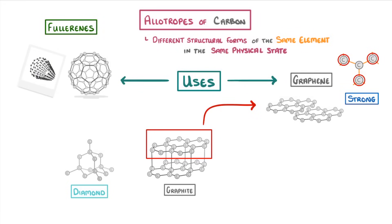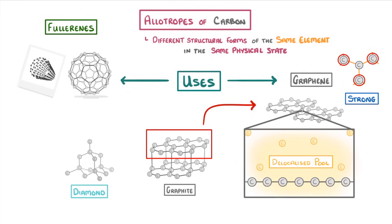And because each of the atoms donates one of its electrons to a delocalized pool of electrons, graphene can also conduct electricity, which makes it useful in making electronics.